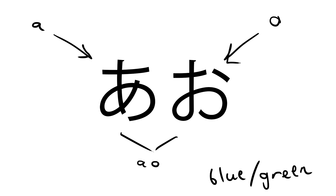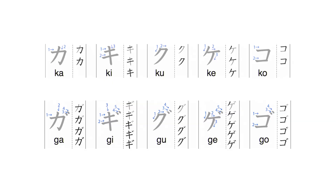In the next column, which is the K column, we have Ka, Ki, Ku, Ke, Ko. Before moving on, there's something really special about these characters — it all starts with the vowel U. The vowel U can actually have a Dakuten, and since Japanese people can't really pronounce the V sound, it becomes more of a B sound.